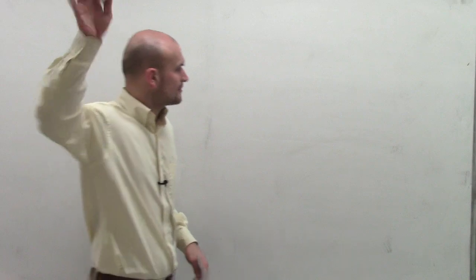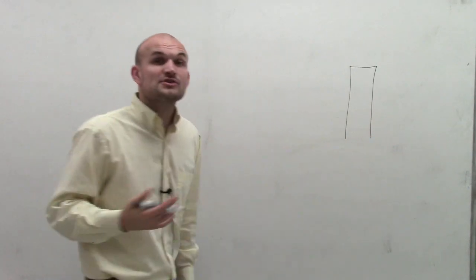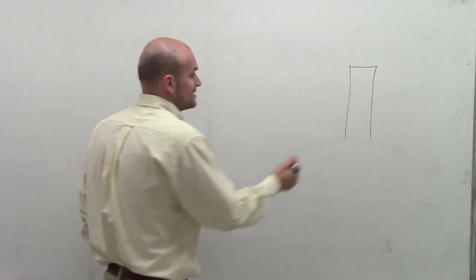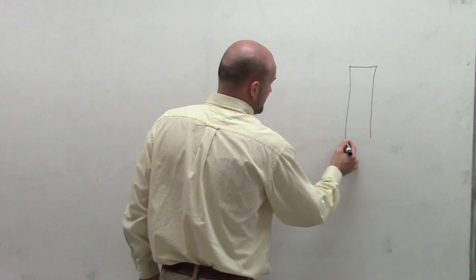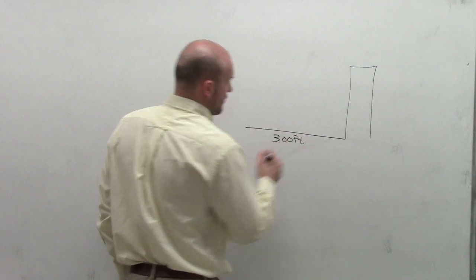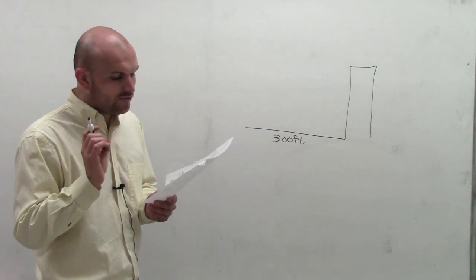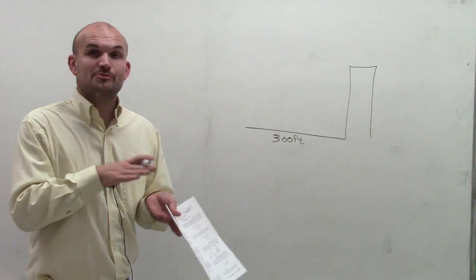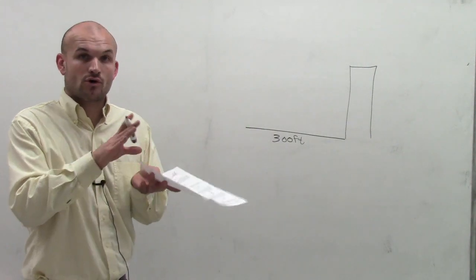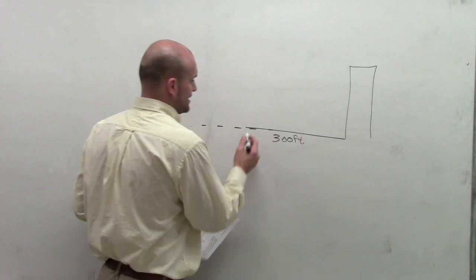Let's back up. So it says from a point 300 feet from a building. What we're going to do is we're going to have a building, and from a point 300 feet from the building. The angle of elevation — remember, angle of elevation is going to be your angle above your horizontal axis, or angle above your horizontal line. So we have a horizontal line here.